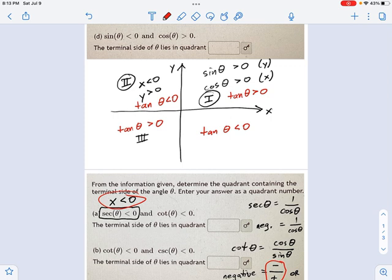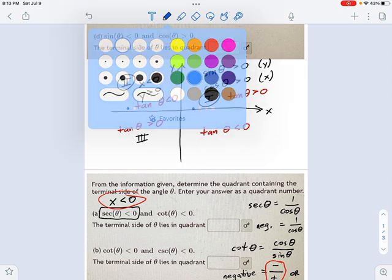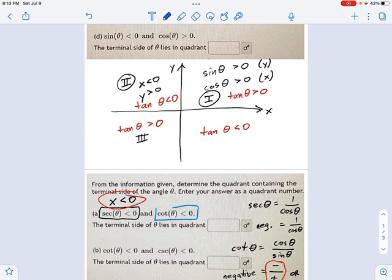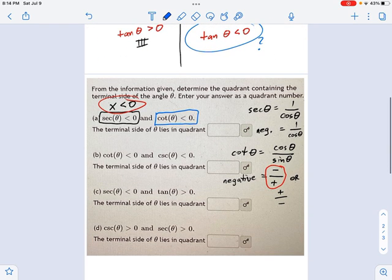So from this problem right here, from this information, cotangent less than zero, I know that I'm either here or here. I don't know which one, but I know I'm in one of those two. And then secant being negative, that points me to this one. So that answers the question. And you're going to go through that process for all of these things right here.